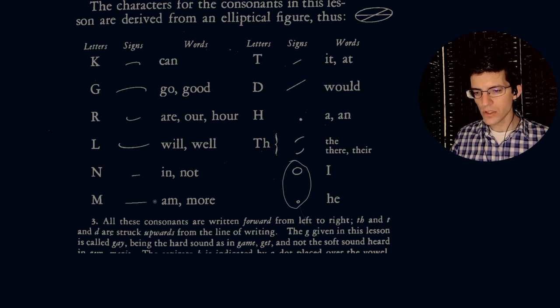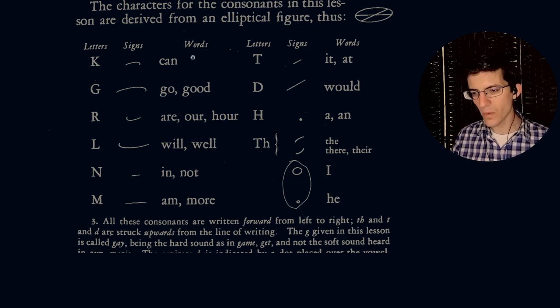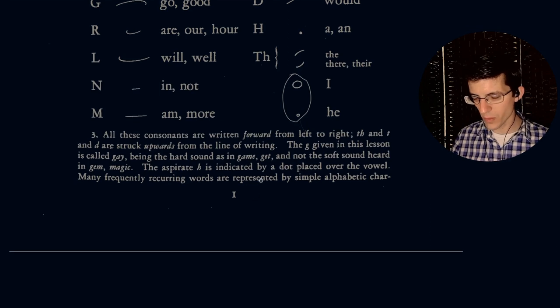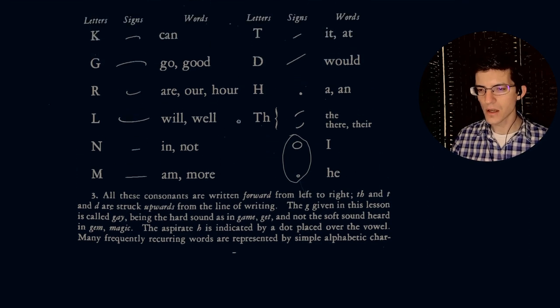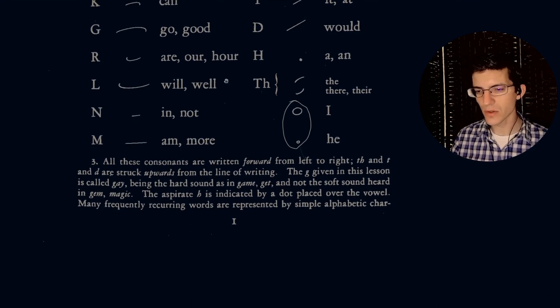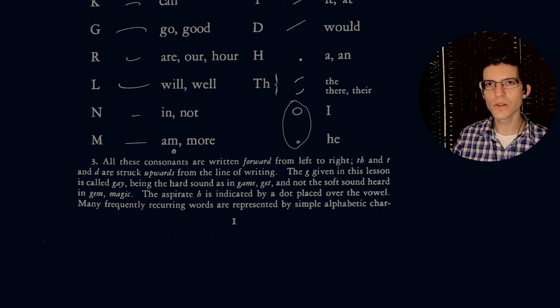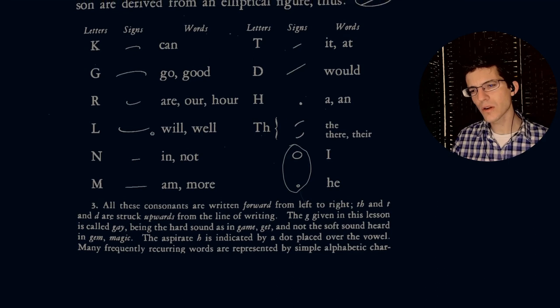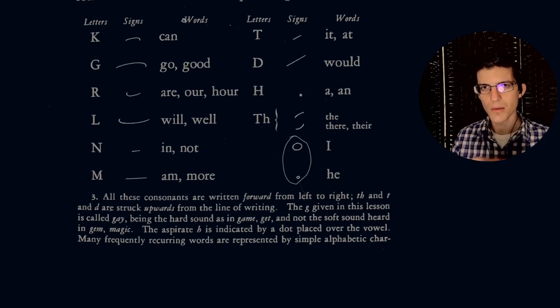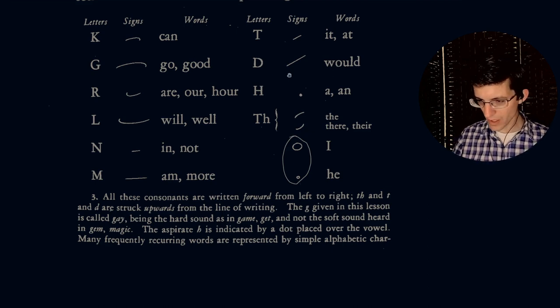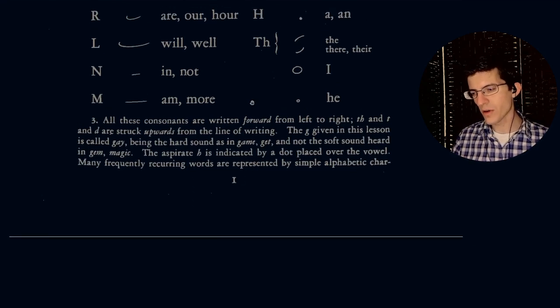All these consonants are written forward from left to right. TH and T and D are struck upwards from the line of writing. Remember that T and D, they're called dentals. R's and L's are called liquids. N's are nasals. And then K and G, I forget exactly what they're called, but they're in the IPA chart.